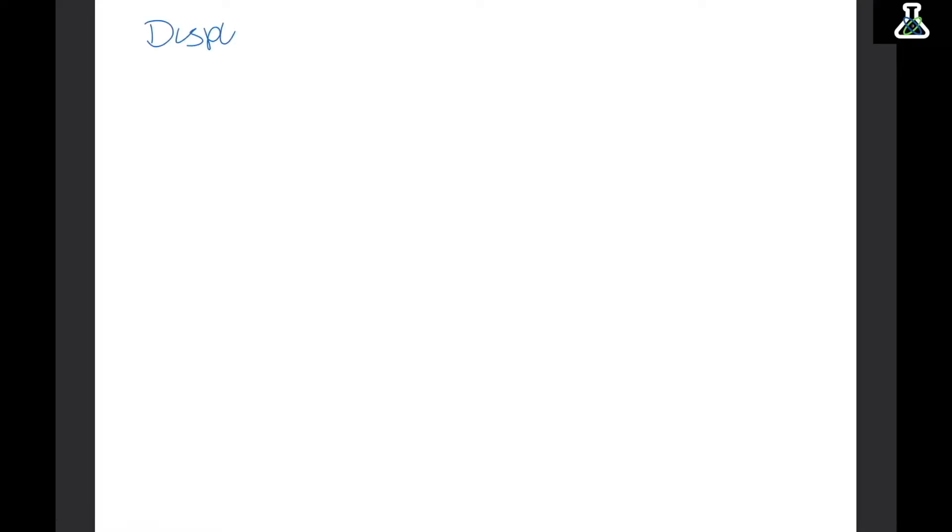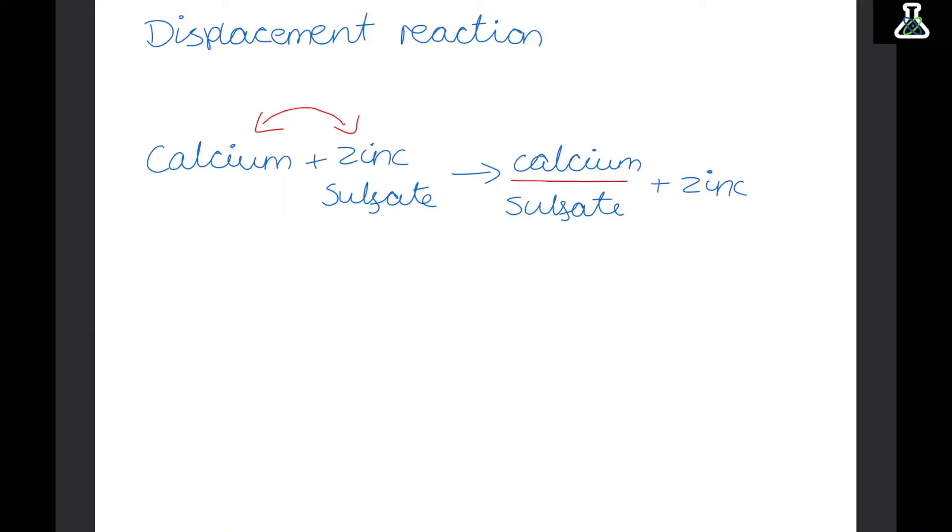Now we're going to look at displacement reactions. So let's look at an example. If we react calcium with zinc sulphate we'll end up with calcium sulphate plus zinc. So the calcium and zinc have just swapped places and this is called a displacement reaction. Now because calcium is higher than zinc in the reactivity series it can take its place. So it becomes calcium sulfate and then zinc is left alone by itself.